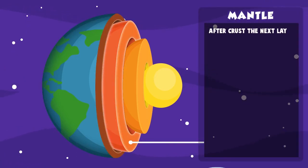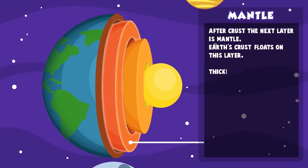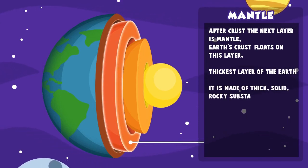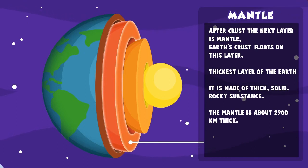Mantle. After the crust, the next layer is the mantle. Earth's crust floats on this layer. It's the thickest layer of the Earth, made up of thick, solid, rocky substance. The mantle is about 2,900 km thick.